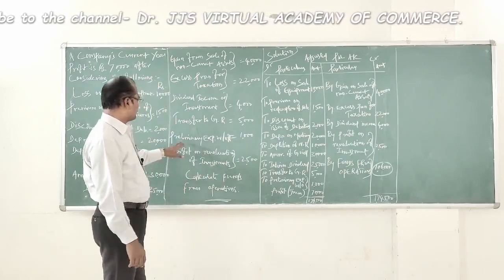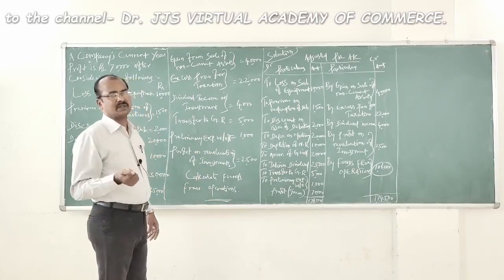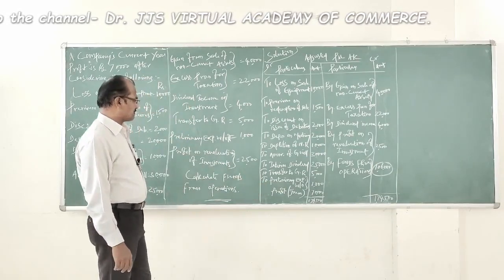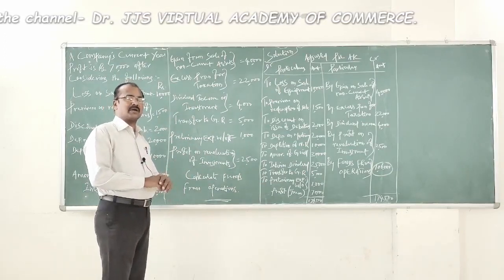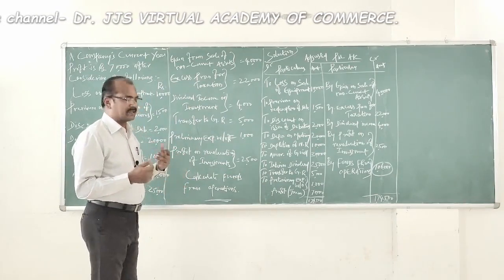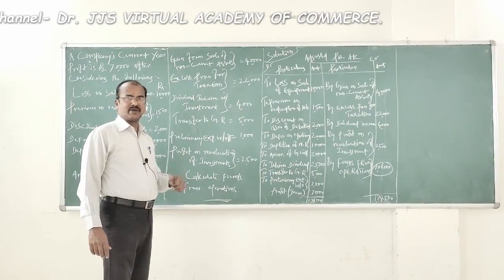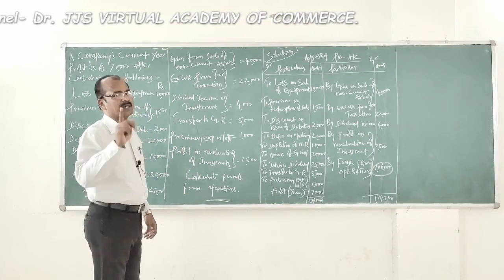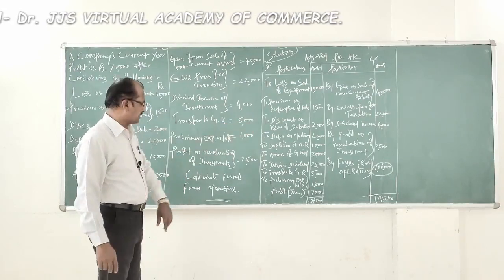Transfer to general reserve is a non-operating activity in the nature of expenditure, so it is debited in the adjusted P&L account. Preliminary expenses written off is also a non-operating activity in the nature of expenditure, so it is debited. Profit on revaluation of investments — when a company revalues its investment and finds an increase in value, that is profit on revaluation. It would have been added to revenues to increase net profit; it is a non-operating income and is credited to calculate funds from operations.